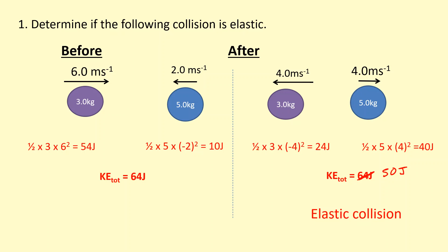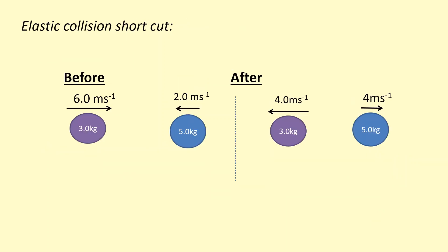That kinetic energy has been converted to some other form, for example thermal energy, and the total momentum is still conserved. Okay, there's a shortcut for checking if a collision is elastic. This condition will be true if it's an elastic collision: the initial velocity of particle one plus the final velocity of particle one should equal the initial velocity of particle two plus the final velocity of particle two. Let's check if this collision is elastic. So initial velocity of particle one is six plus the final velocity which is minus four. That gives me a total of plus two.